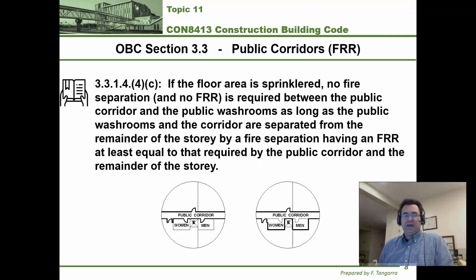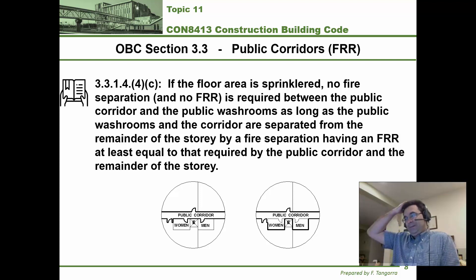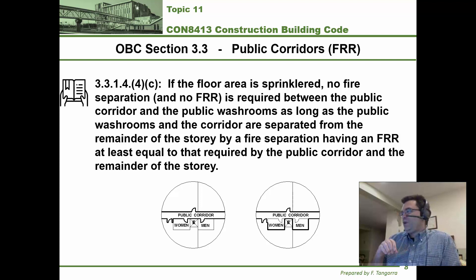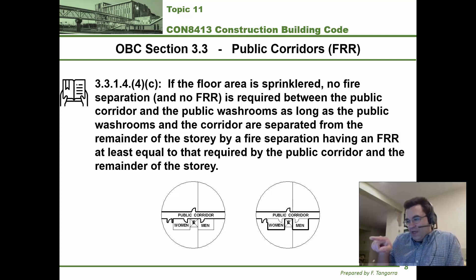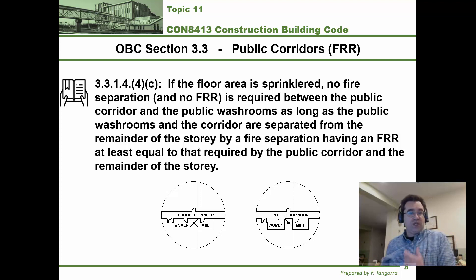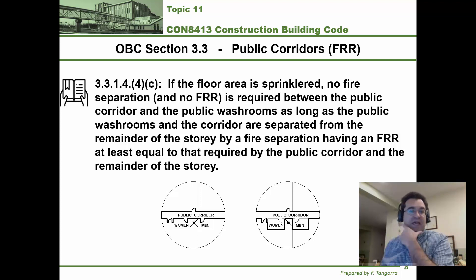There's also a clause that says if the floor area is sprinklered — as in the ACE Building — no fire separation and no fire rating is required between a public corridor and the public washroom, as long as the washroom and corridor are separated from the remainder of the story. This is illustrated in one of the two sketches shown on screen and in your course notes. Is this what they have for the ACE Building? Go find out.